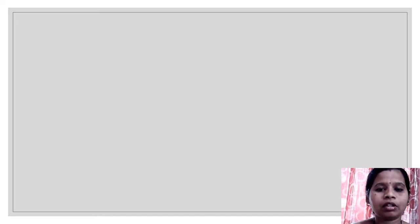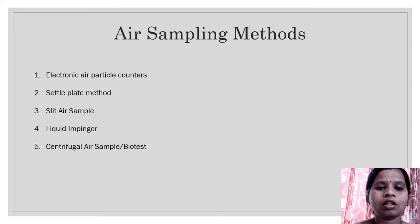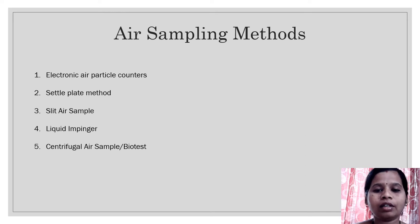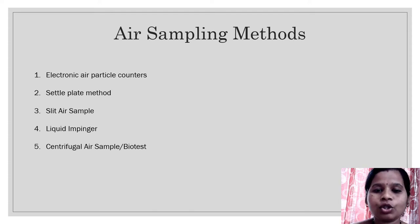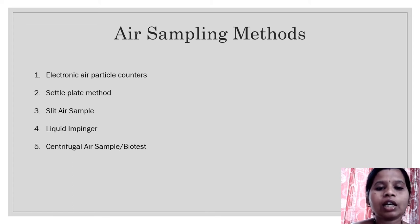In air sampling, the very first method is the electronic air particle counter. These counters are specifically used to determine the number of particles or microbes, counted per cubic feet, and classify the cleanliness of a particular room or area. However, electronic counters can count air particles and microbes but cannot differentiate between viable and non-viable microorganisms, so we need to use other methods for that purpose.